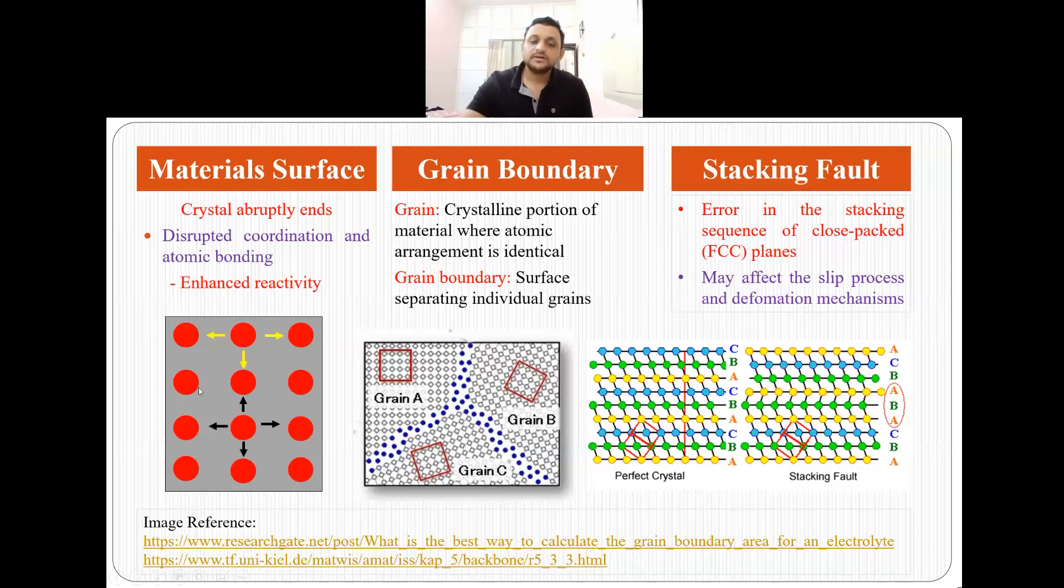But if you see the surface atom, this atom is pulled by this atom and this atom, but there is no upward force. So there is a force imbalance and since there is a force imbalance it leads to disrupted coordination and atomic bonding. This disruption in coordination and atomic bonding leads to enhanced reactivity and that is why the surface of material is considered as a surface defect.